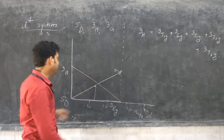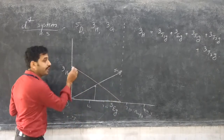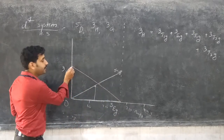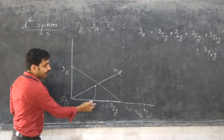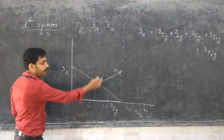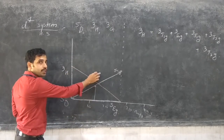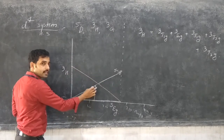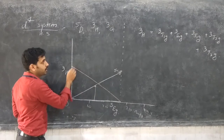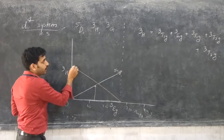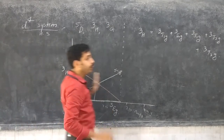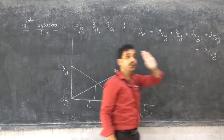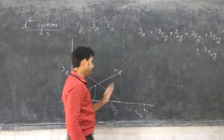That is where you can draw the Tanabe-Sugano diagram in color chalk. The 3H term is at 5D, where 5EG and 5T2G is one transitional line, and in the 3H term there are 5 transitional lines: 1, 2, 3, 4, and 5.